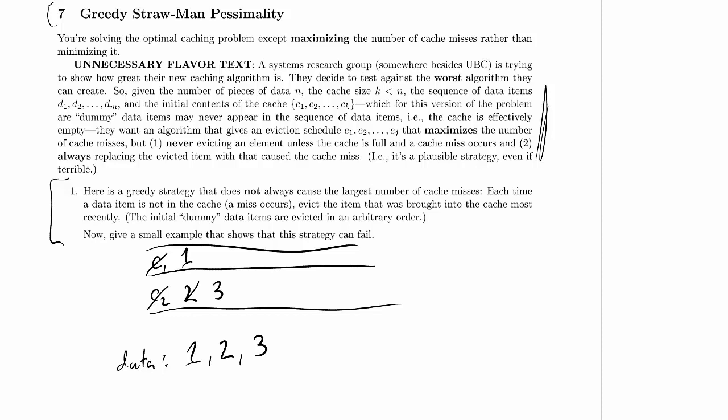So evict 2 for 3. And we want to make that the wrong choice to maximize cache misses. So we actually want to make that the right choice. So why don't we have 1 be the next thing? And so we'll actually get a cache hit at that point. And then 2. And when we get 2, we're going to evict the most recently brought in thing, which was 3, right?